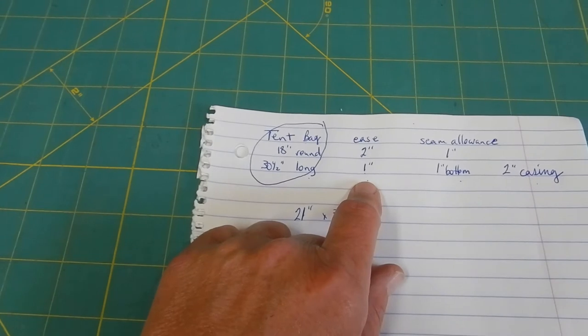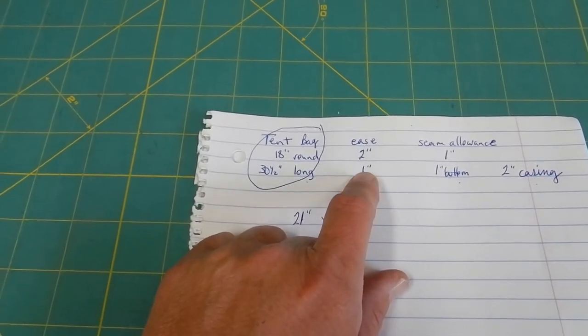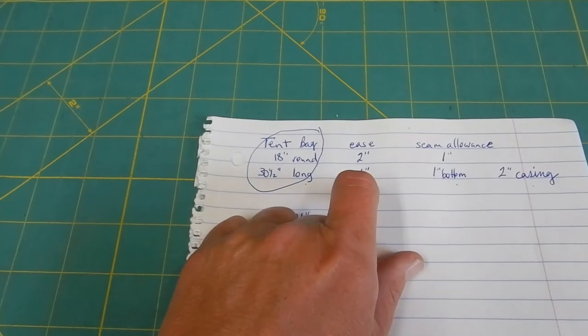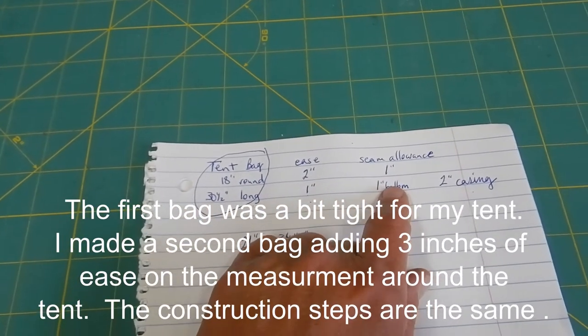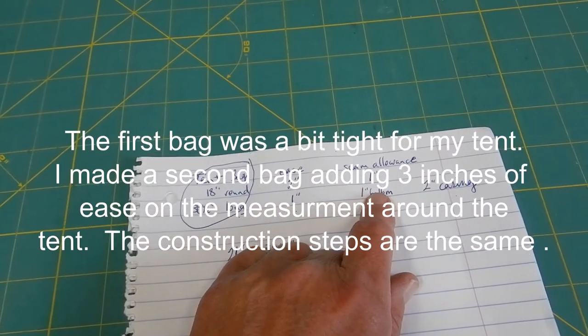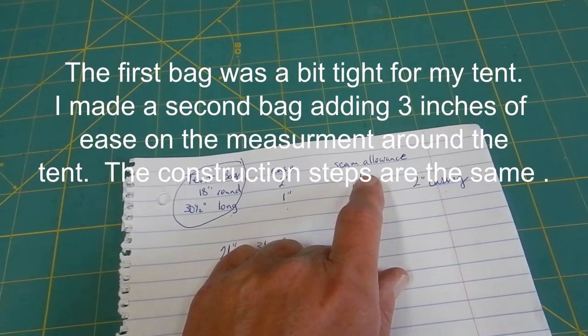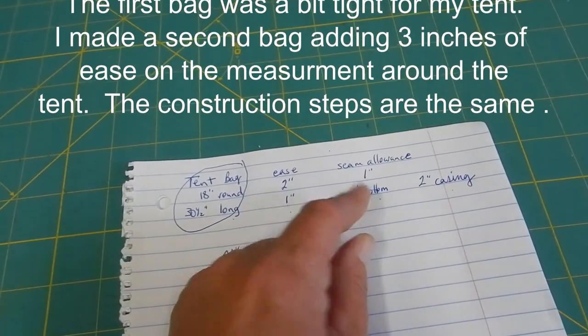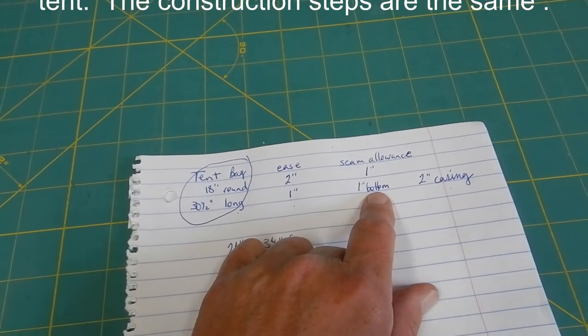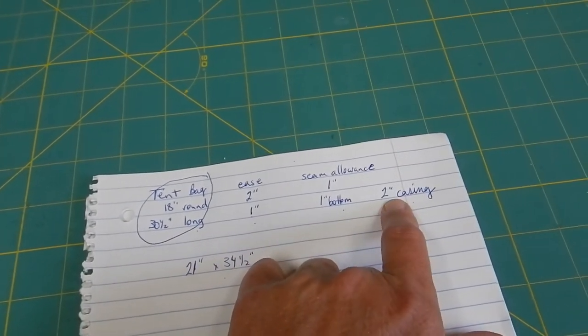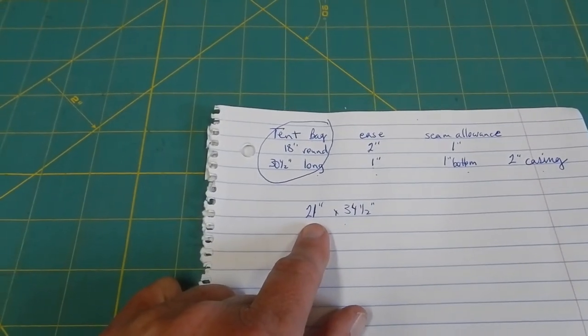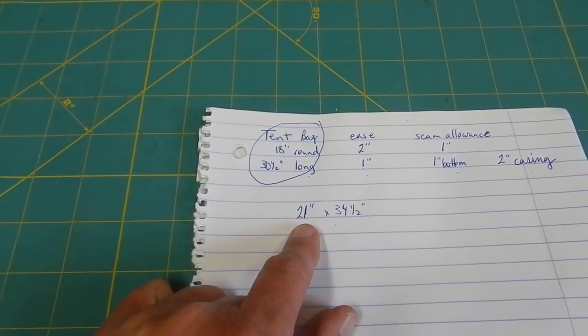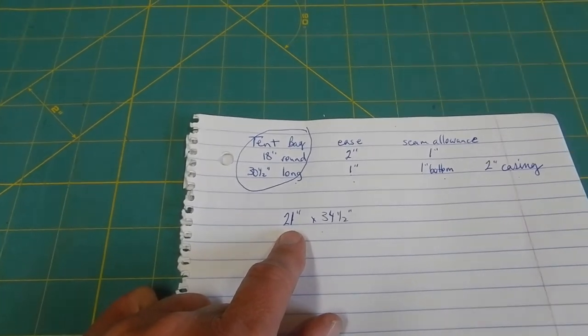I'm going to add some ease, that means the bag will be a little bit bigger than the tent. I need one inch longer on the length and two inches on the circumference, and then I need a seam allowance that's to take up the fabric that will be taken up in putting it together. So I need one inch for the round and one inch on the bottom, and I'm going to do a casing at the top of two inches. So I need a rectangle cut out of my ripstop fabric that's 21 inches by 34 and a half inches.